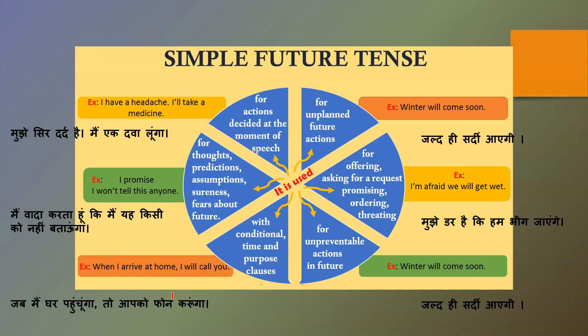Simple future tense is also used for actions decided at the moment of speech. For example, 'I have a headache — I will take a medicine.' The decision to take medicine is made right now, at the moment of speaking, so the exact time is not decided.